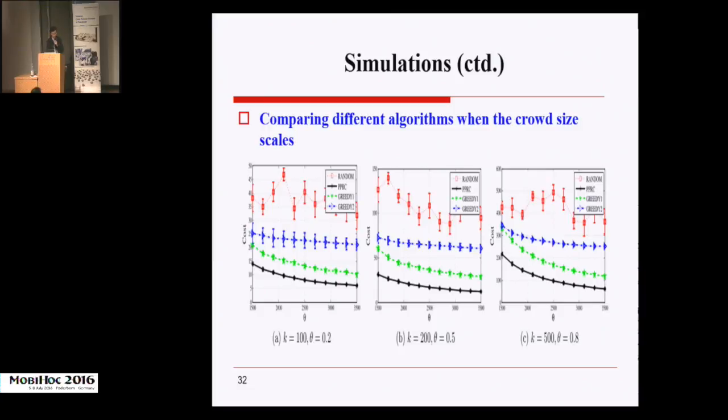This is reasonable because more users need to be selected to satisfy the covering constraint for a larger theta. Next, we study how the size of the crowd impacts the performance. Again, it can be seen that PPRC outperforms the others. Besides, the cost output by Random, Greedy 1, and Greedy 2 all decrease when N increases. N is the size of the crowd. This can be explained by the reason that the searching space for selecting users enlarges when the crowd size increases, so groups with smaller costs can be found to meet the quality requirement.